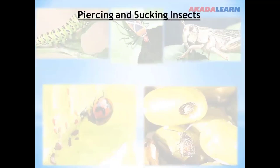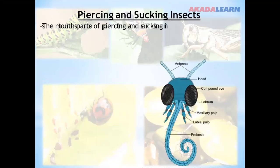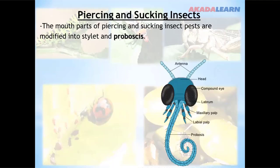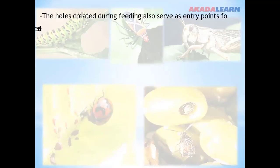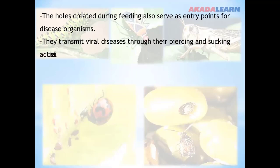The next group is piercing and sucking insect pests of crops. The mouth parts of piercing and sucking insect pests are modified into stylets and proboscis. They pierce plant parts and suck sap and juice. The holes created during feeding also serve as entry points for disease organisms, and they transmit viral diseases through their piercing and sucking activities.